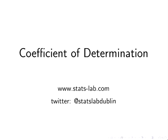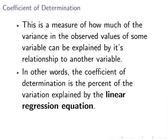In this presentation we're going to look at the coefficient of determination. The coefficient of determination is a measure of how much the variance in the observed value for some variable can be explained by its relationship to another variable.